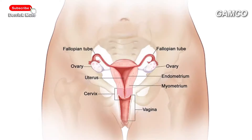Number three: the cervix. It is a cylindrical neck of tissue. Its function is to connect the vagina to the uterus, and therefore it regulates entry and exit into and out of the uterus — for example, movement of sperm into the uterus and movement of the developing fetus out during birth.